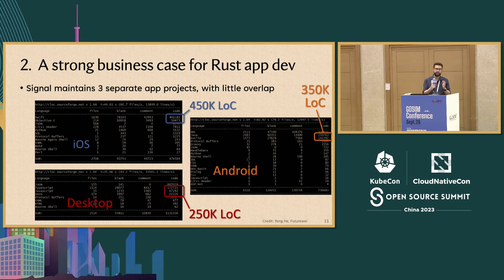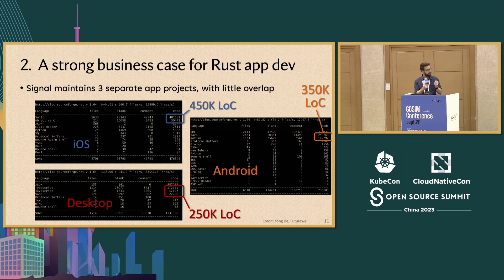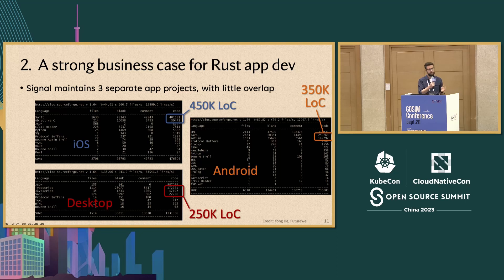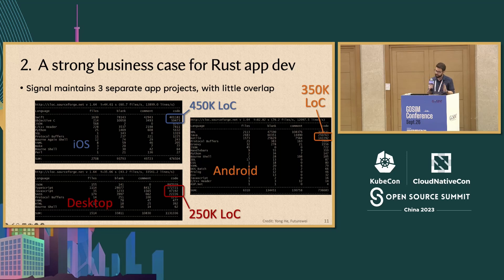As you can imagine, it's very challenging for a business like Signal, even with being open source and soliciting community contributions, to maintain consistency in both behavior and application appearance across all these different platforms. There are slight inconsistencies — on some platforms you can't search a particular chat for text; on others, you can only search one chat. There are issues with biometric lock protection on certain chats, font choices, and similar things that in other contexts could be significant deal-breakers or barriers to adoption on one platform versus another.